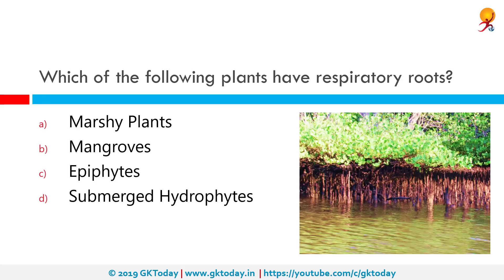Which of the following plants have respiratory roots? The correct answer is mangroves. Respiratory roots are usually aerial roots, defined as a root which, for part of the day at least, is exposed to the air. The mangrove mud is rather anaerobic — oxygen-poor — therefore unstable, and different plants have developed root adaptations to cope with these conditions.